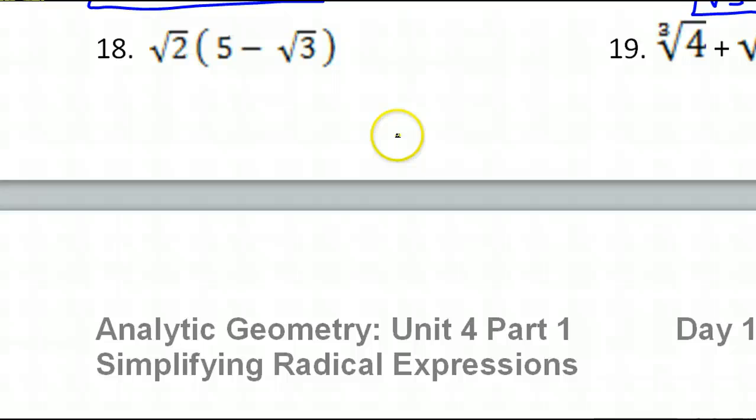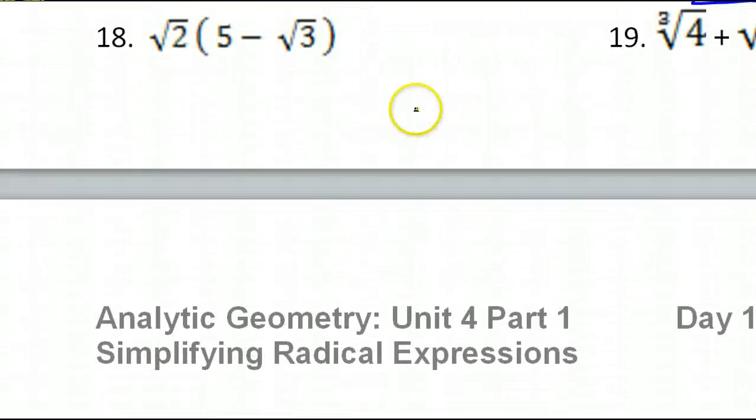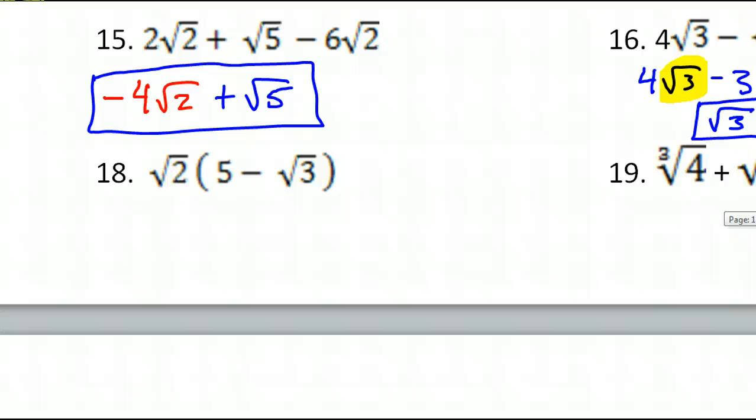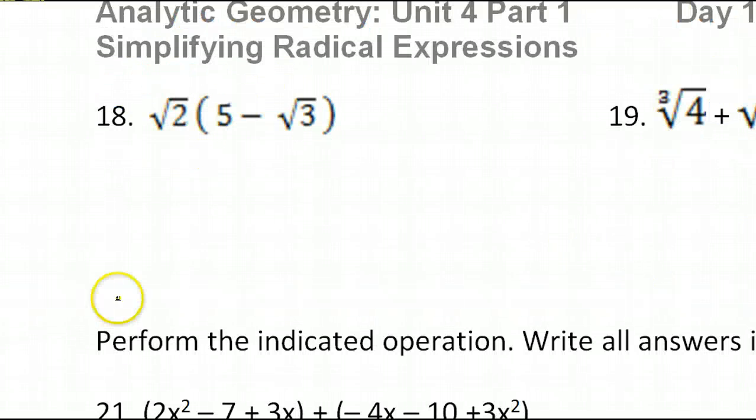Number 18. Well, here we've got this radical in front of these parentheses. I don't know about you, but I feel a distributive property coming on. Radical 2 times 5, well that's just going to be 5 radical 2. Radical 2 times radical 3 is radical 6. And you know what? There's nothing else to be done. You can't simplify radical 6, so these are not like terms. So that's it, end of the line.